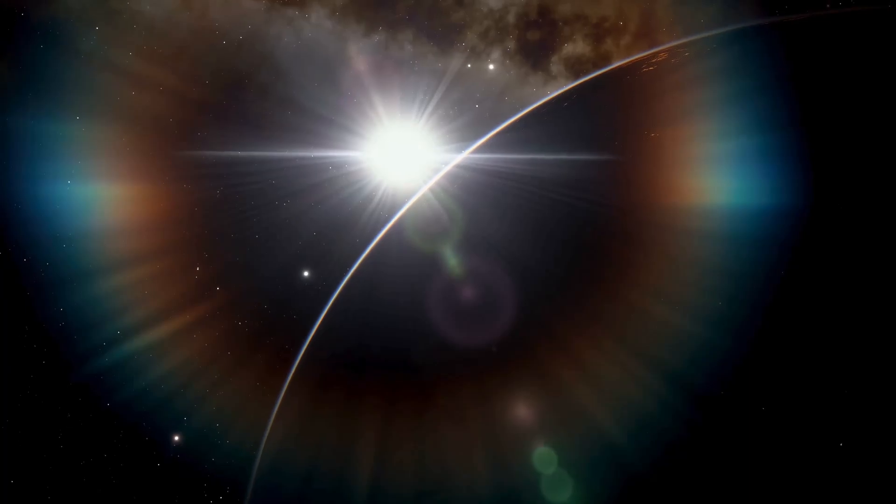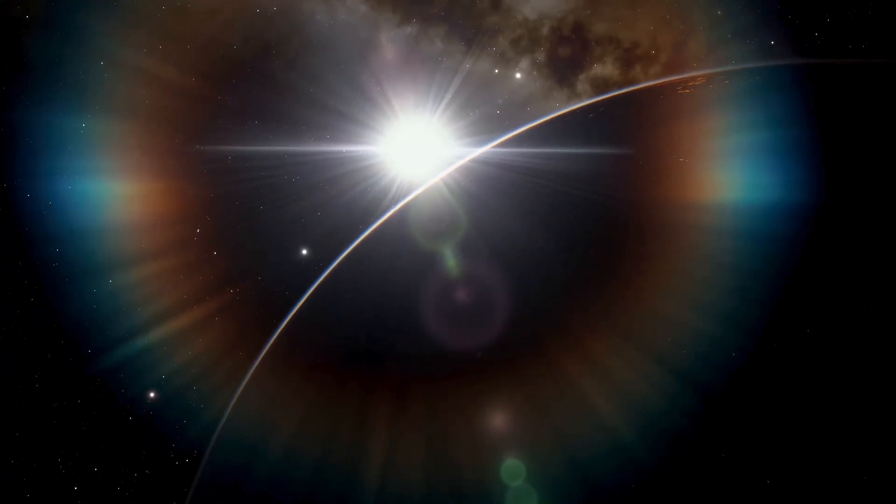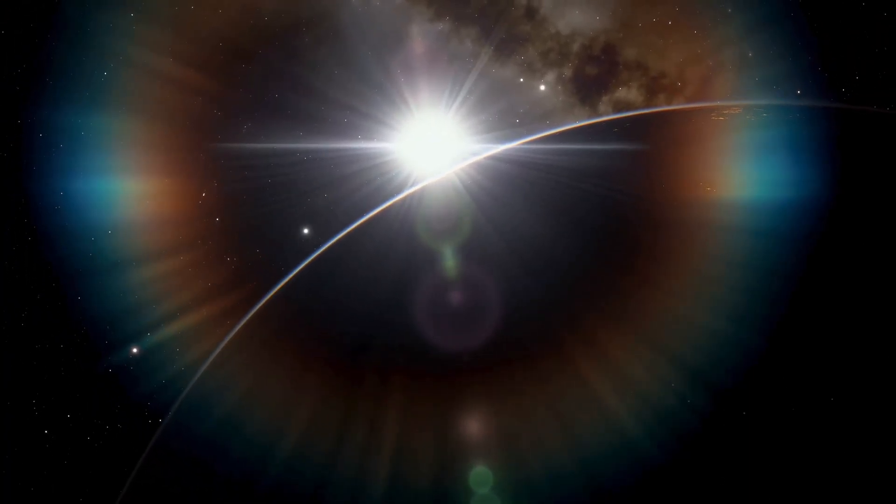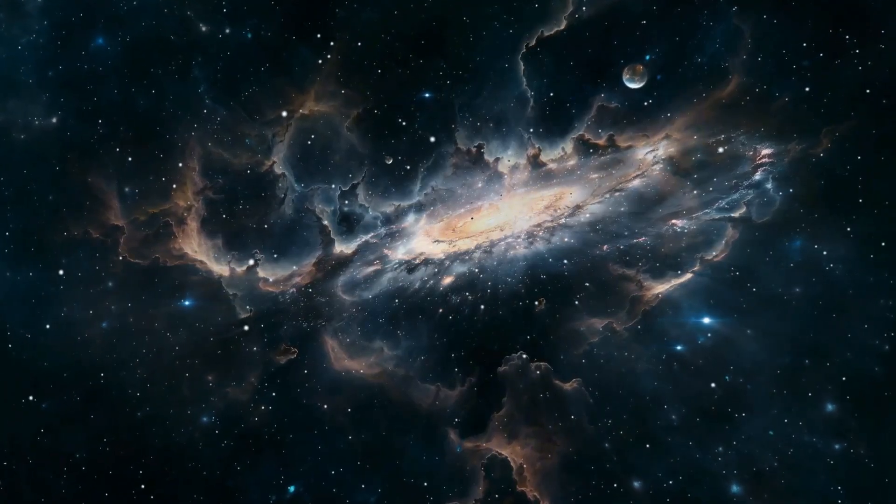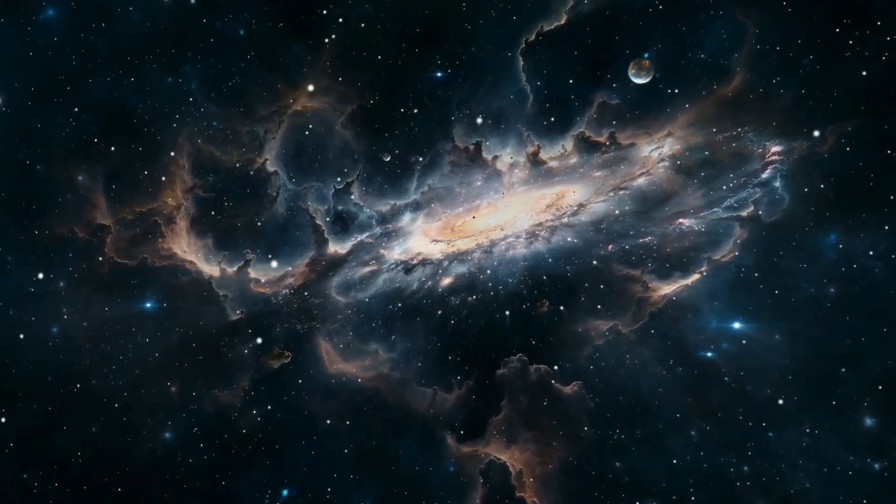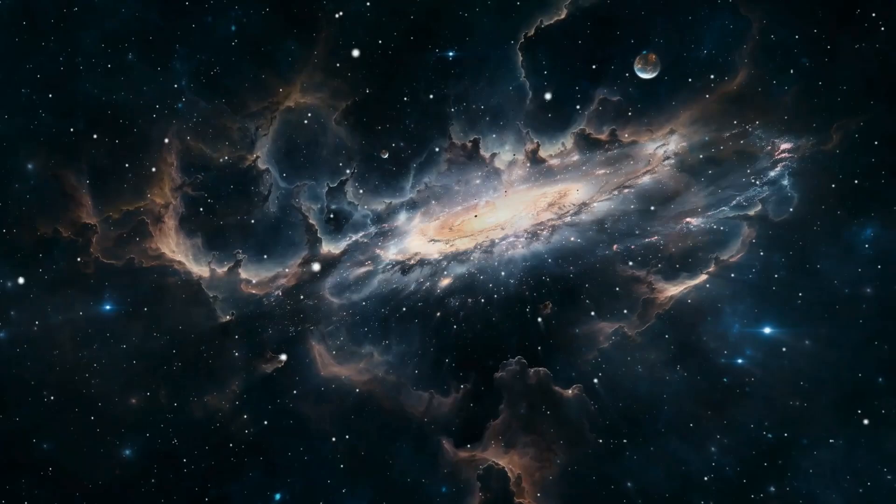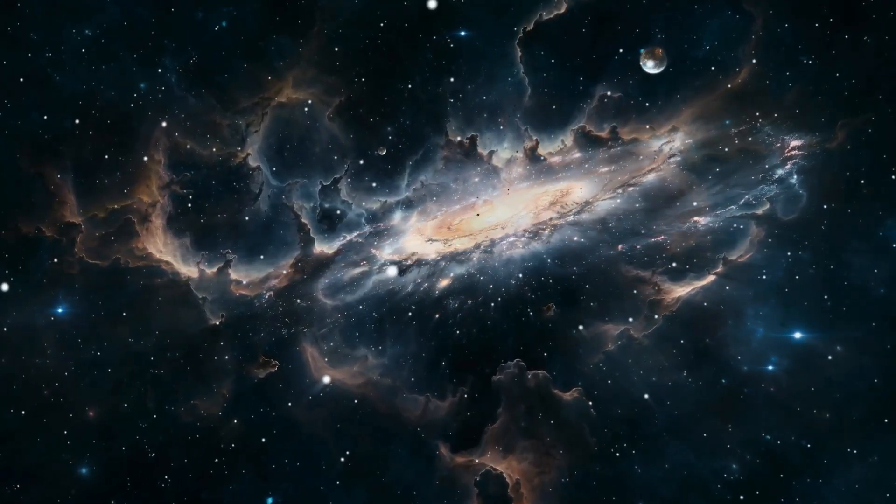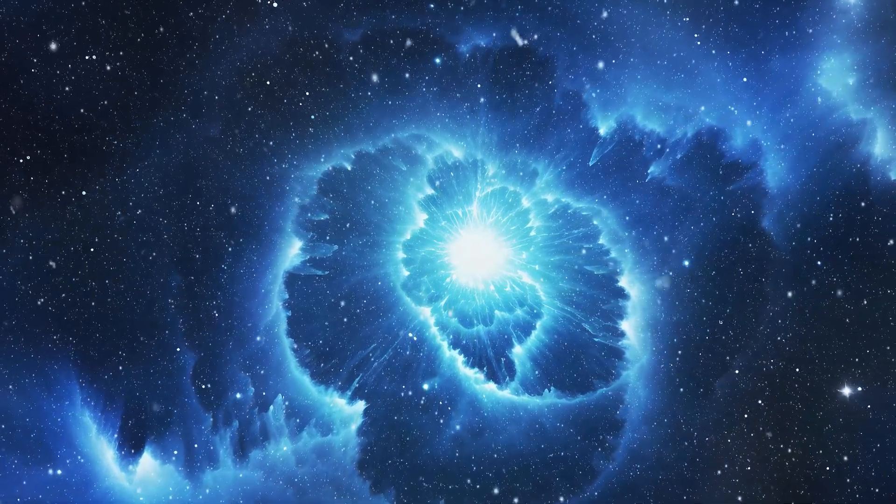Pluto's journey around the Sun is unlike any other planet in our solar system. It takes a staggering 248 years to complete a single orbit, meaning that since its discovery in 1930, it hasn't even finished one full revolution. Yet the intrigue doesn't stop there.